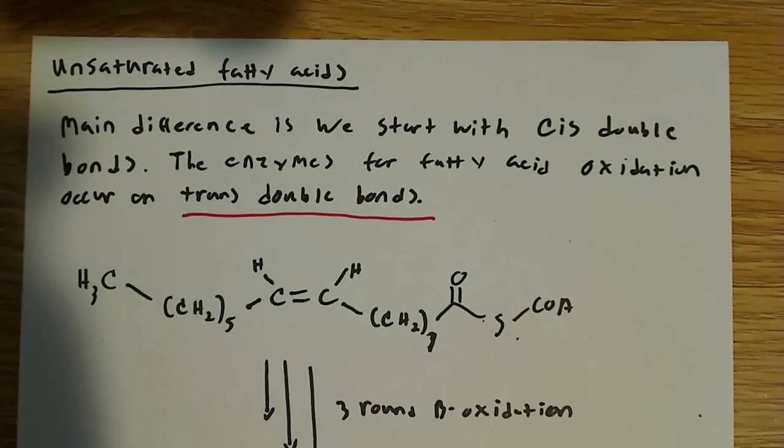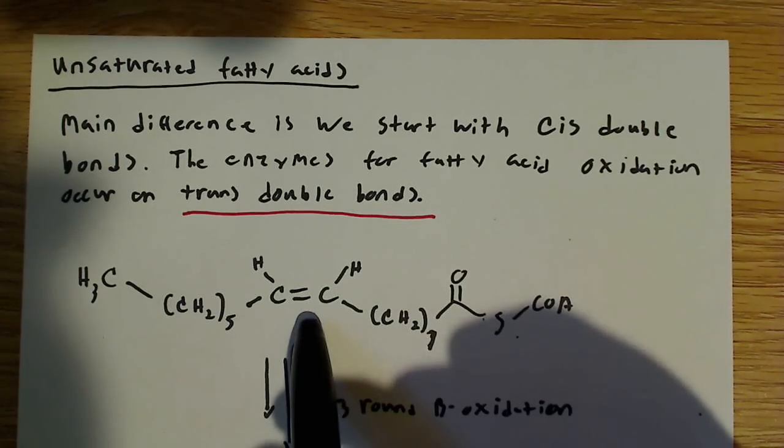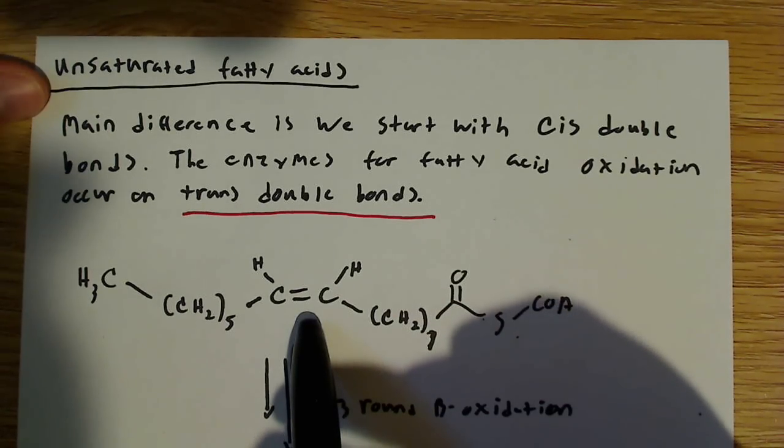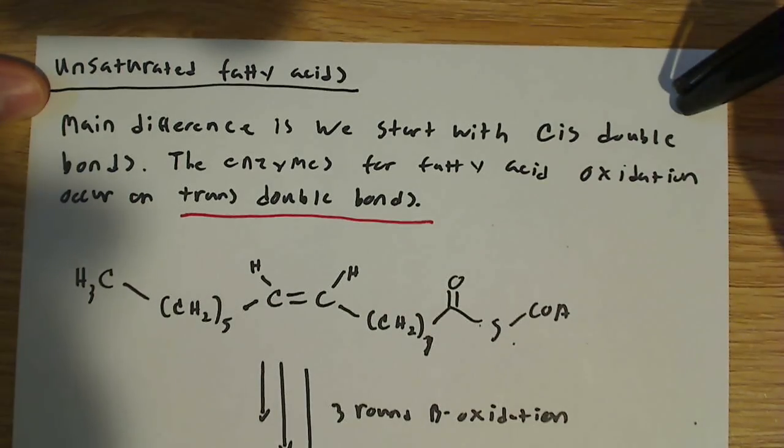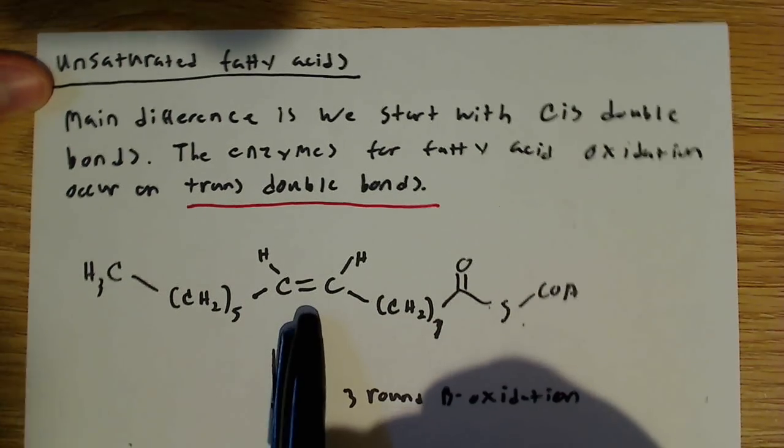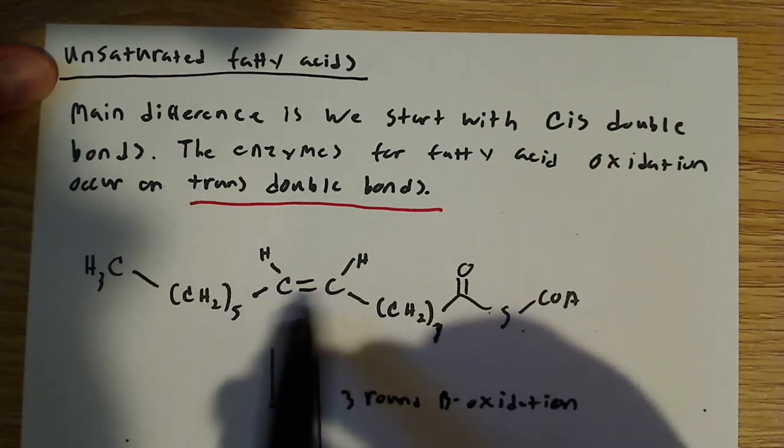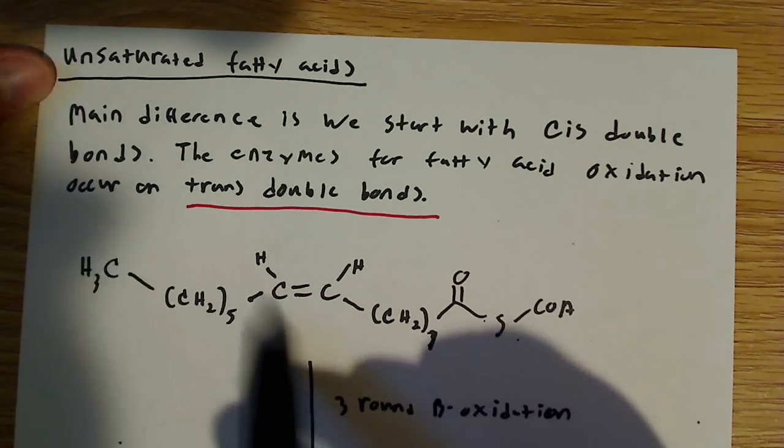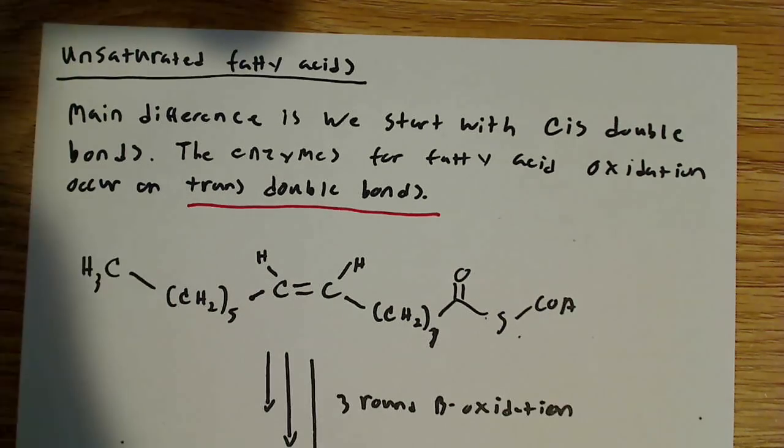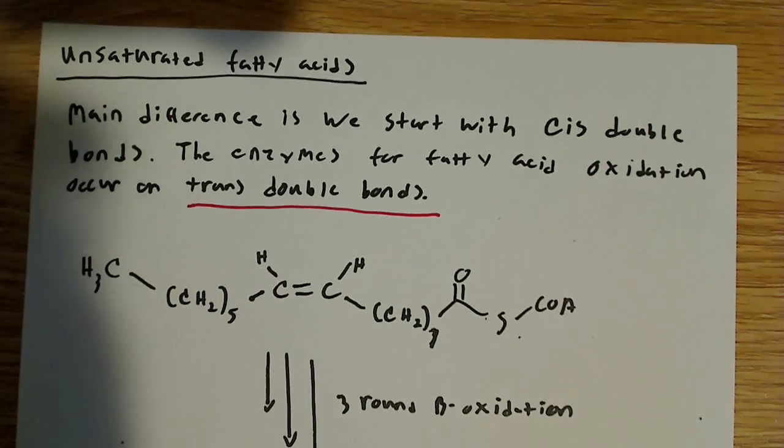But the big difference here is the type of bond we're dealing with, or the double bond that we're dealing with. The main difference is we start with a cis double bond. Recall from organic chemistry, cis means these are on the same side, the hydrogens are on the same side, and the chains are on the same side. They're not on opposite sides, so it's not a trans double bond.